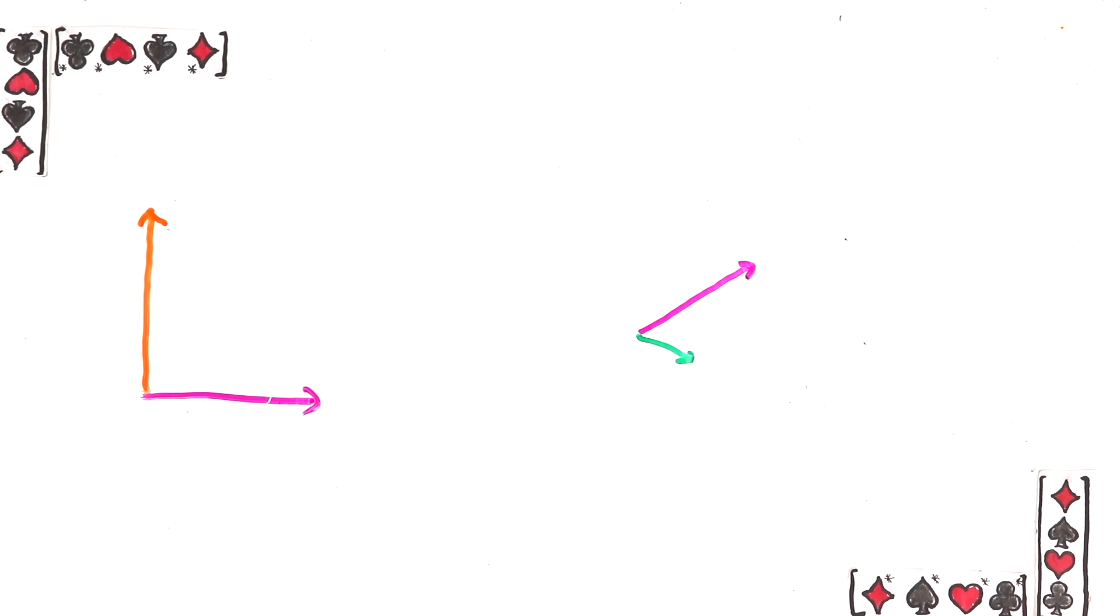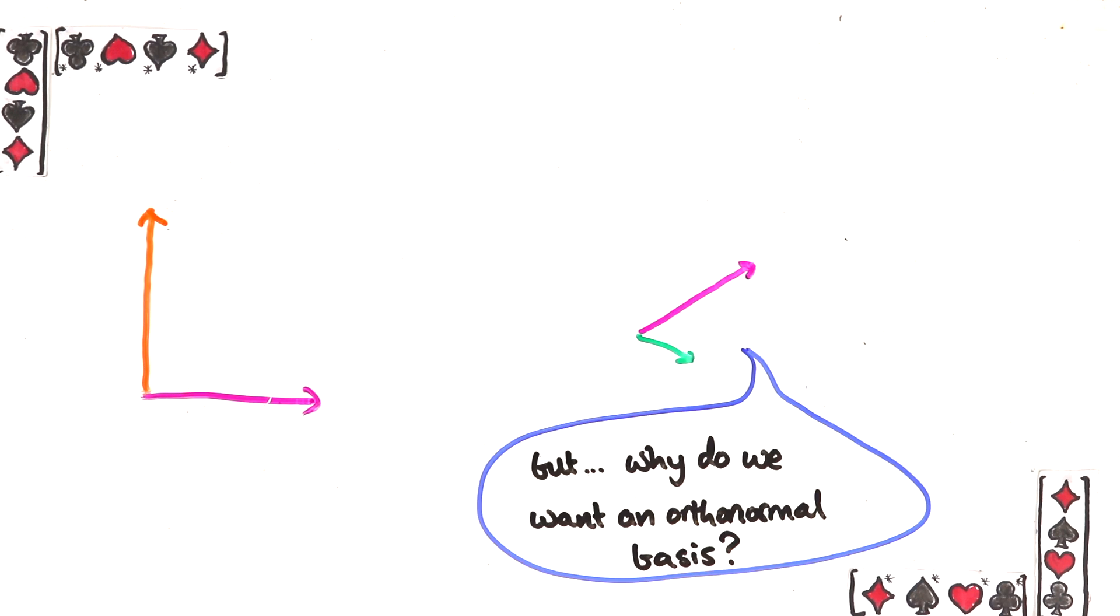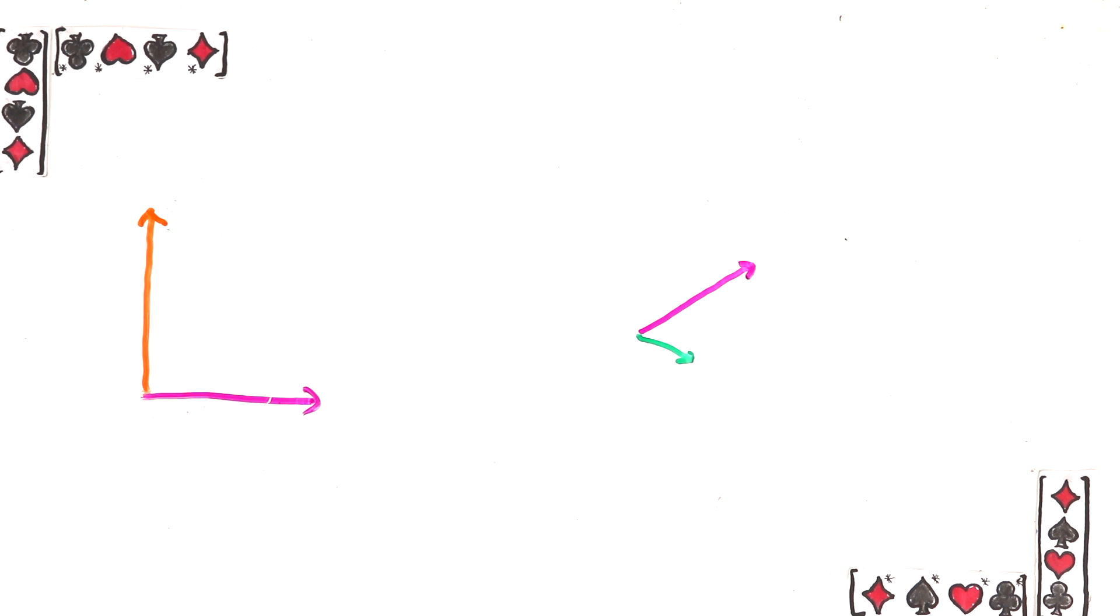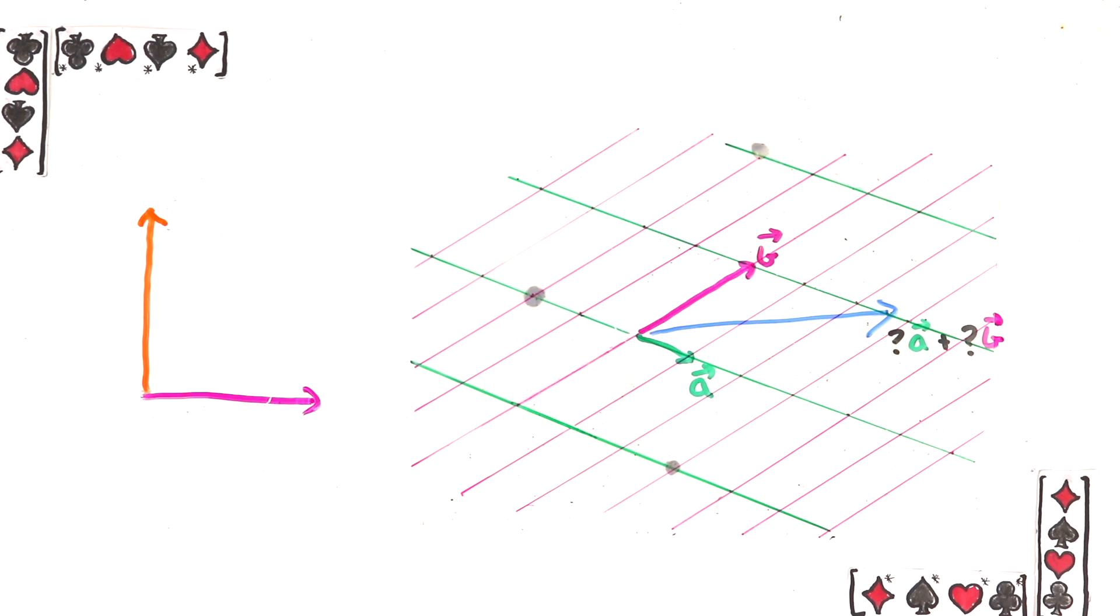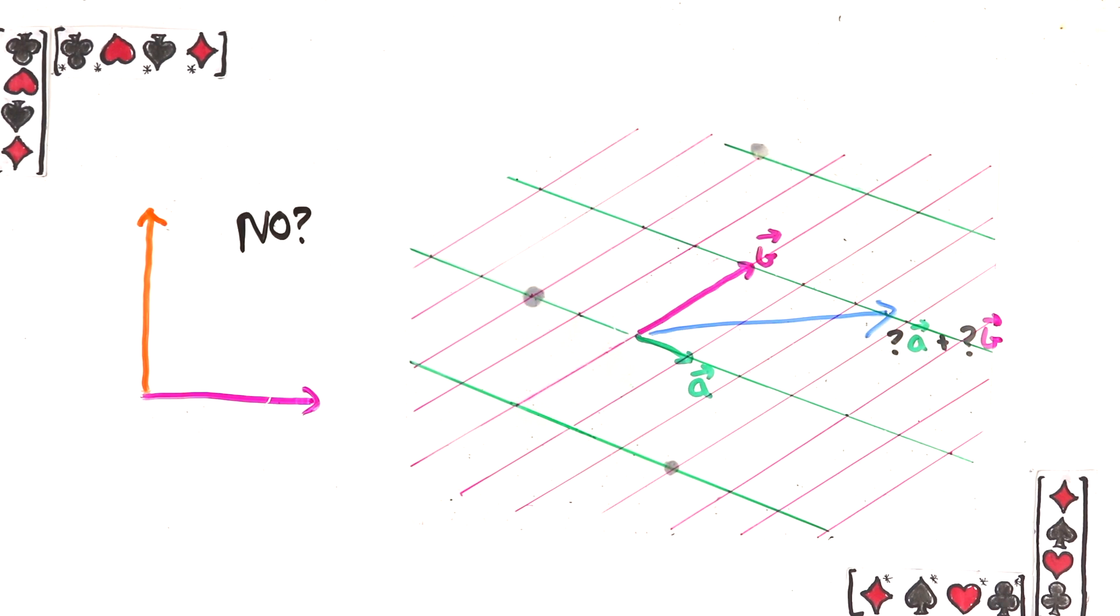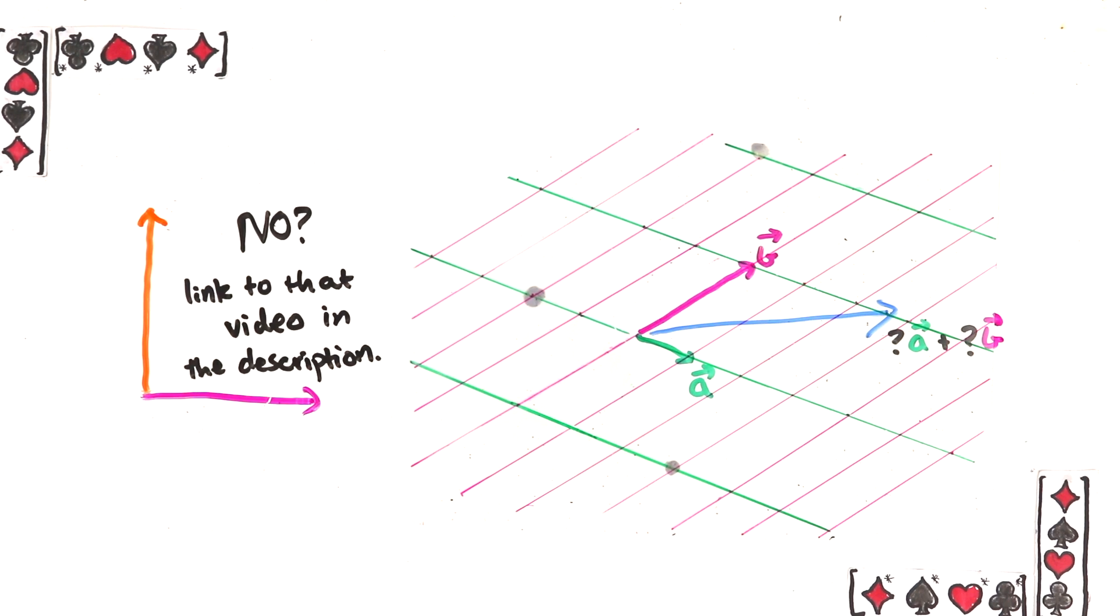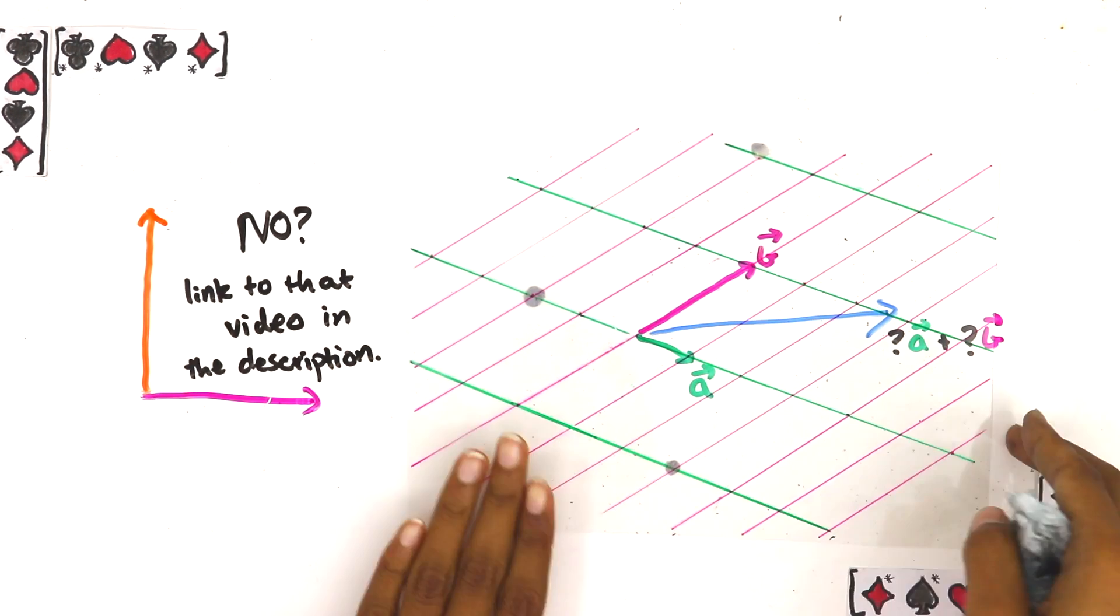Now why would you want an orthonormal basis? Because they're so much easier to work with. Remember in the vectors video I said that if you had a 2d basis and you wanted to find out how to write a particular vector as a linear combination of the basis vectors you could draw this grid and figure it out from that. Well if you have an orthonormal basis it's way easier to do than that.